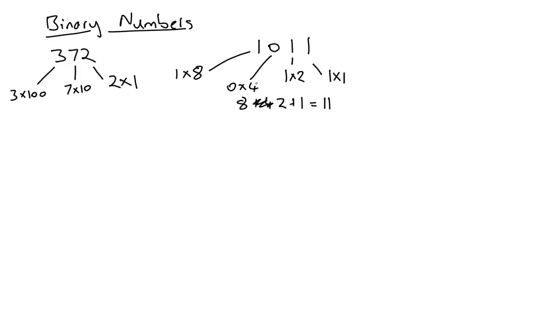The reason this is important is because the computer's memory is organized in a series of cells. You can think of it as a series of cells like this, and each cell is called a bit. So we've got four bits here.